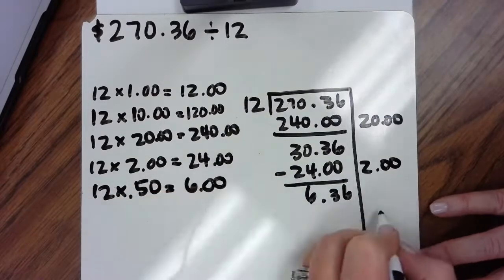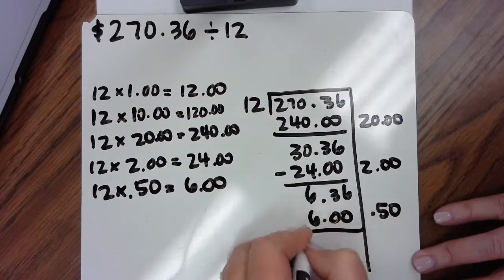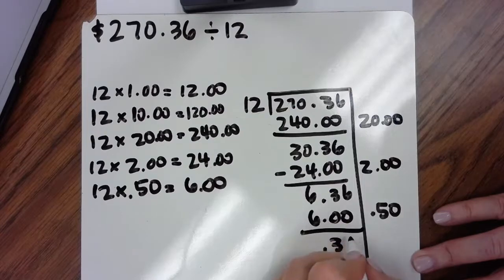So 12 groups of $0.50 is $6 and that leaves me $0.36.